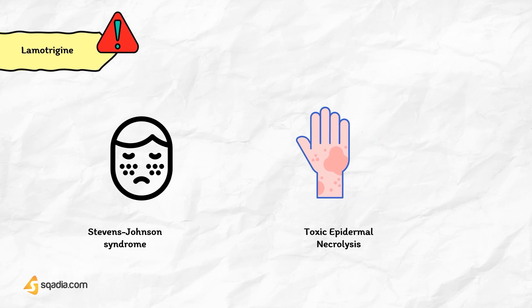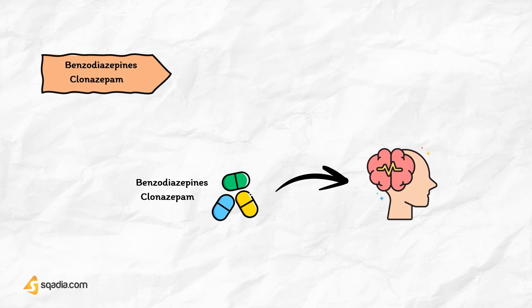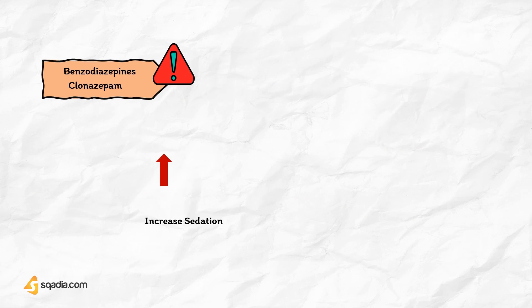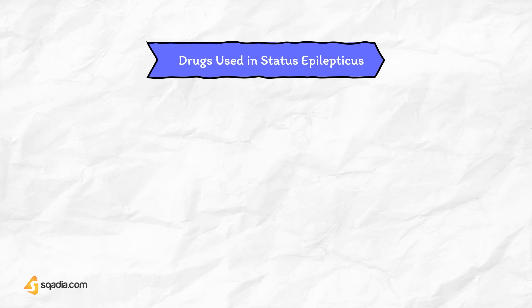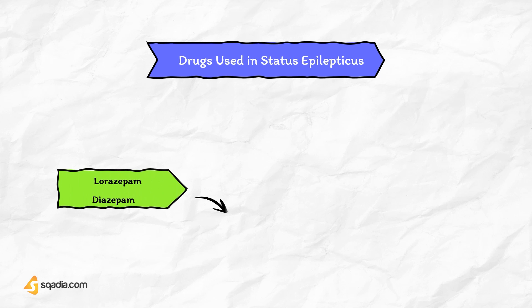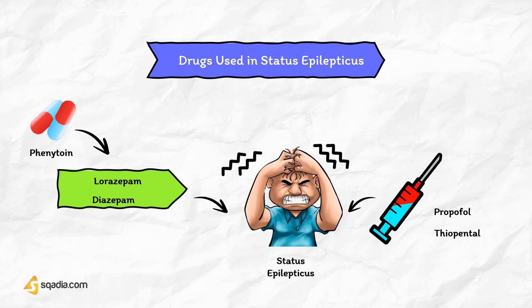Clonazepam is a potent anticonvulsant, but is very sedative and tolerance occurs with prolonged oral administration. Drugs that are effective in status epilepticus: lorazepam or diazepam is used to treat status epilepticus, initially followed by phenytoin if necessary. If the fits are not controlled, the patient is anesthetized with propofol or thiopental.